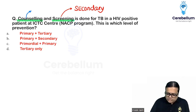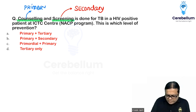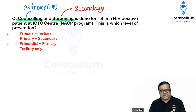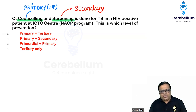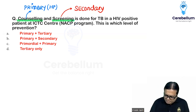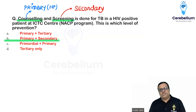Counseling will be primary — health promotion. The person has a risk of TB, and you are counseling them on how to prevent it. You are advising them even before the screening result comes: maintain your diet, maintain your nutritional status, and try to stay away from crowded environments. So this is primary prevention.